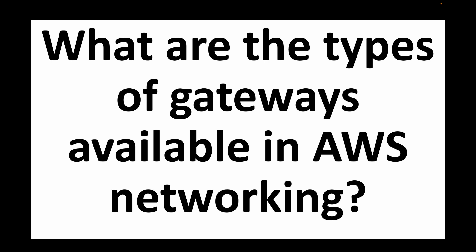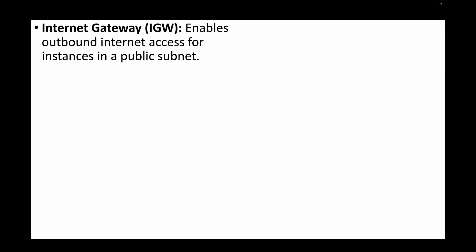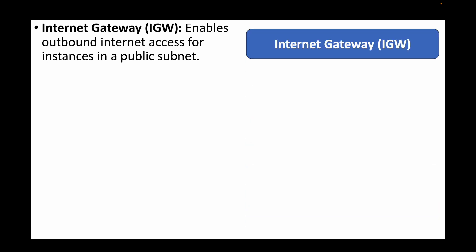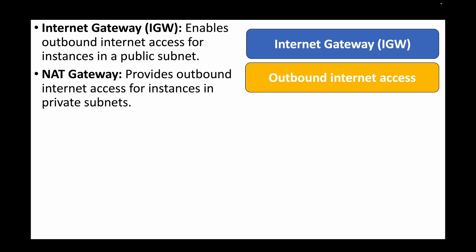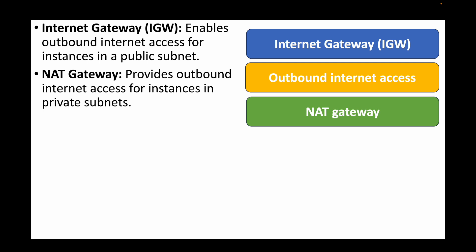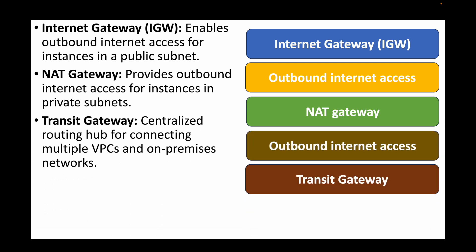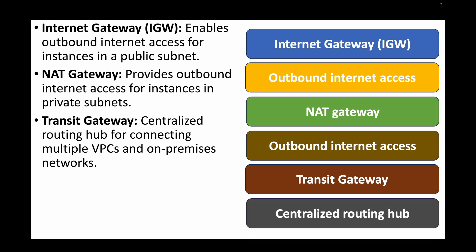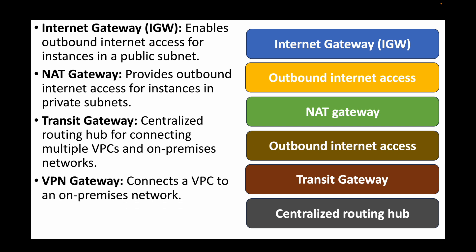The next question is: what are the types of gateways available in AWS networking? We have the Internet Gateway, used to enable internet access for public subnets. The NAT Gateway provides internet access to private resources like private EC2 instances. The Transit Gateway acts as a centralized routing hub for connecting multiple VPCs and on-premises networks. The VPN Gateway allows you to connect your VPC with your on-premises network securely.